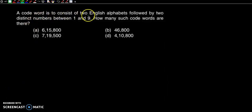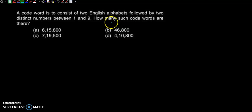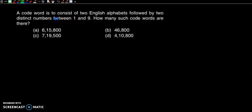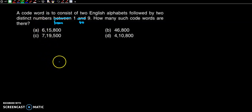A code word consists of two English alphabets followed by two distinct numbers from 1 to 9. How many such code words are there? Note: the problem should say 'from 1 to 9' rather than 'between 1 and 9' — that is the correction here.